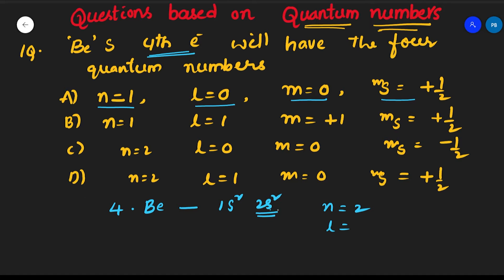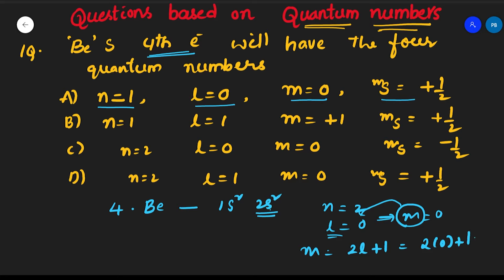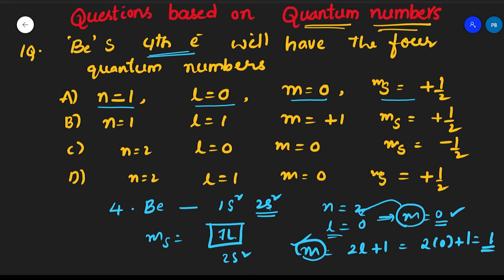For s orbital, l value is 0. Since l=0, m is also 0 — the number of m values is 2l+1 = 1, and that one value is 0. For the spin quantum number: 2s² has two electrons, and the second electron must have ms = −½. So option C is the correct answer: n=2, l=0, m=0, ms=−½.